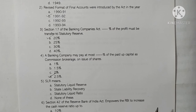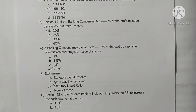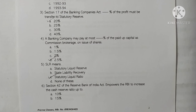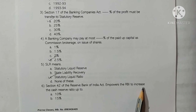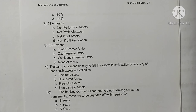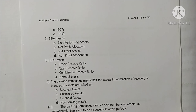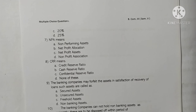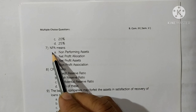SLR means Statutory Liquidity Ratio. Option C is correct. Section 42 of the Reserve Bank of India Act empowers the RBI to increase the cash reserve ratio up to 15%. Option B is correct. NPA means Non-Performing Assets. Option A is correct.